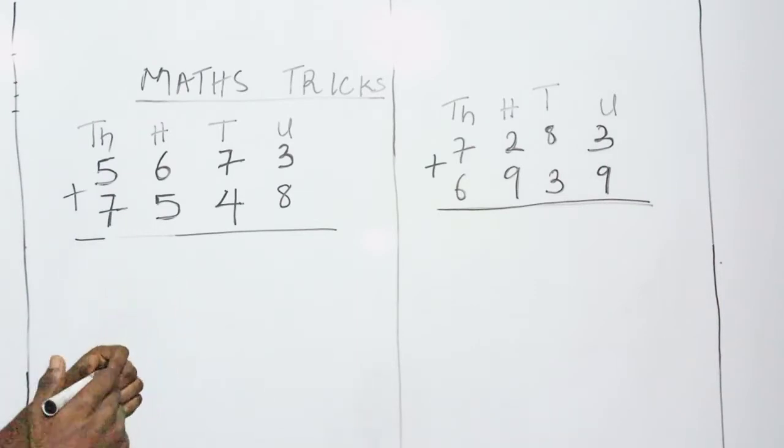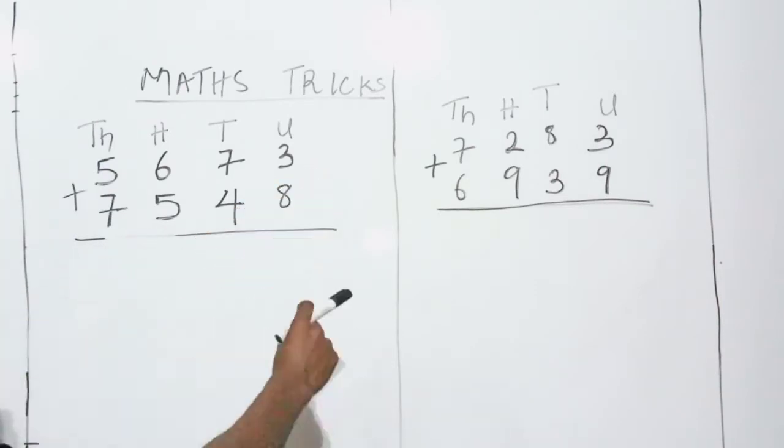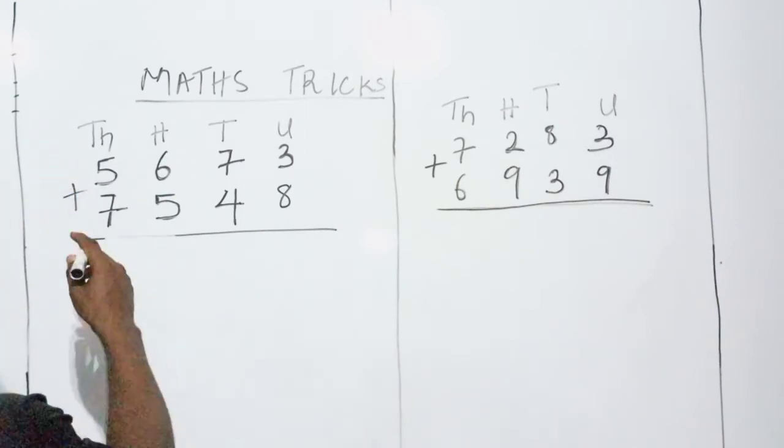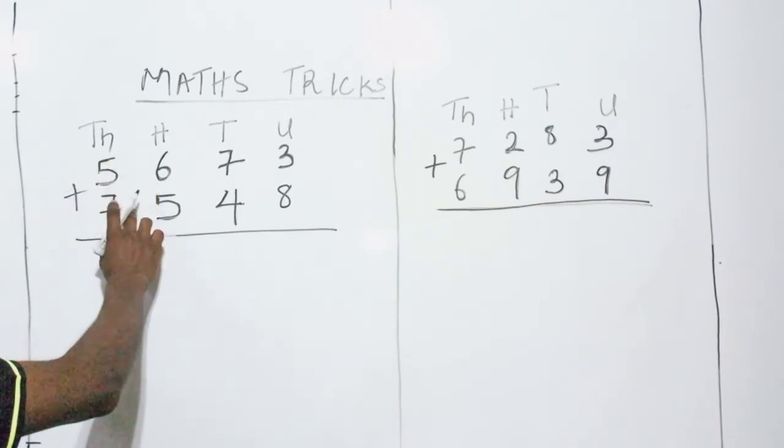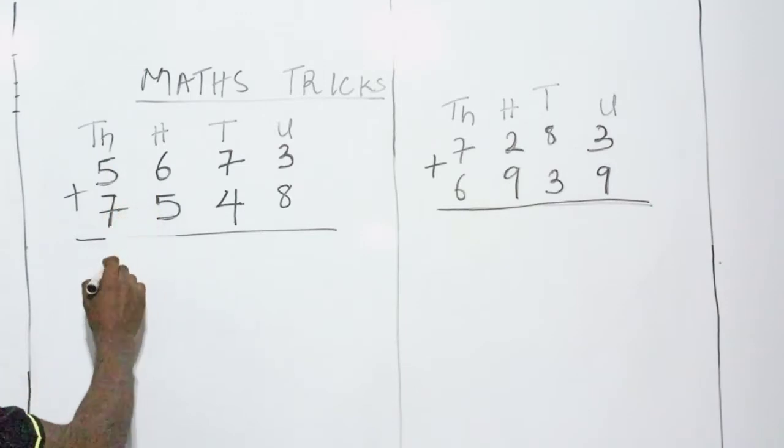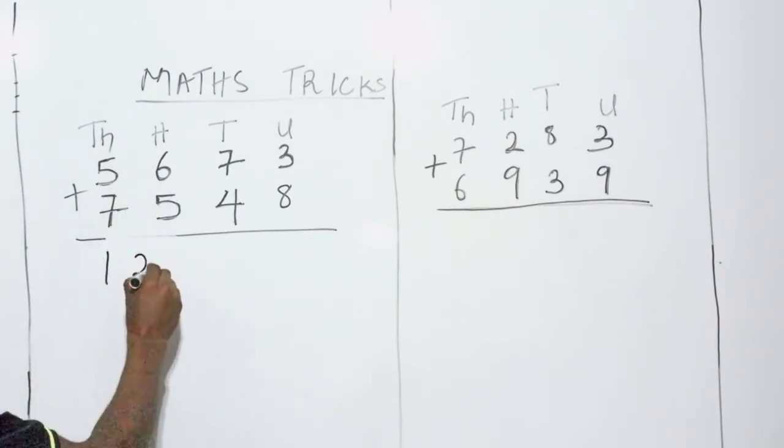At this point, I don't need to start from the unit. Rather, I start from the 1,000, which is the last one. Now, 7 plus 5, 5 plus 7 is what? 5 plus 7 is 12. I have to write 12.